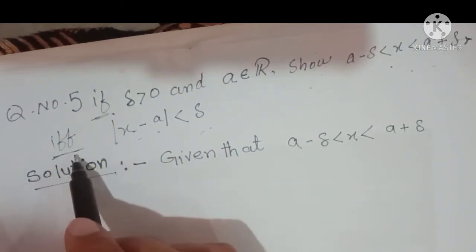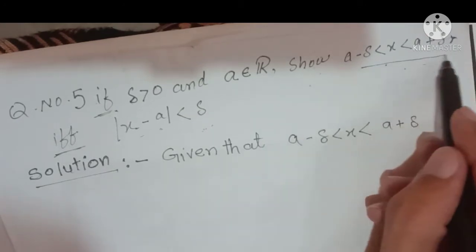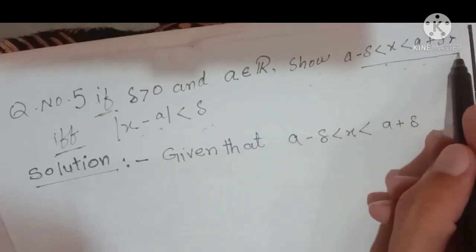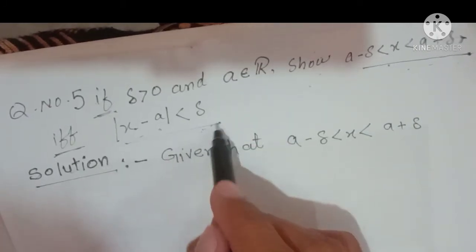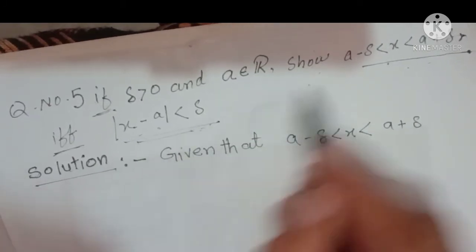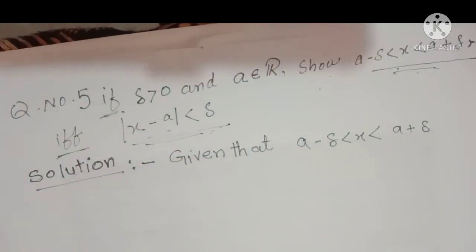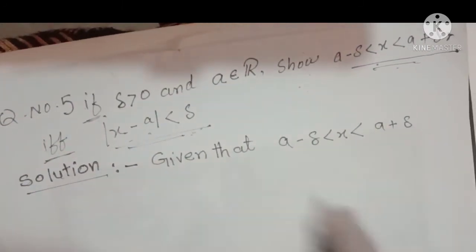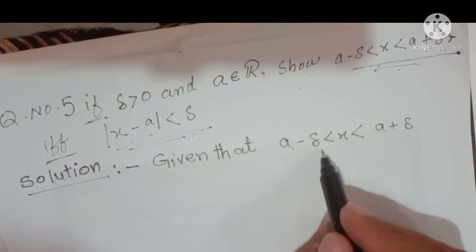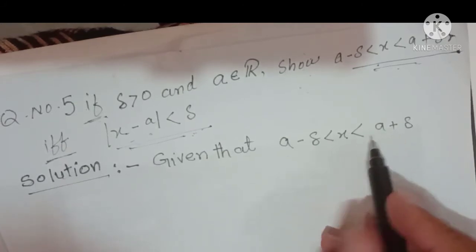Since this is an 'if and only if' statement, we must prove both directions. First, we take a minus delta < x < a plus delta as given and prove |x minus a| < delta. So, given: a minus delta < x < a plus delta.